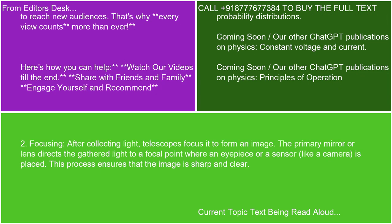2. Focusing. After collecting light, telescopes focus it to form an image. The primary mirror or lens directs the gathered light to a focal point where an eyepiece or a sensor, like a camera, is placed. This process ensures that the image is sharp and clear.